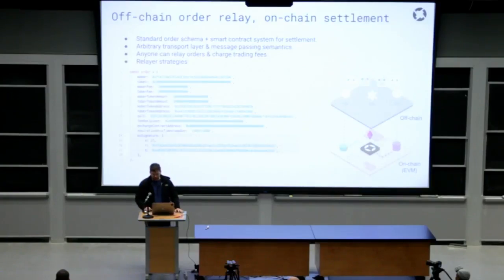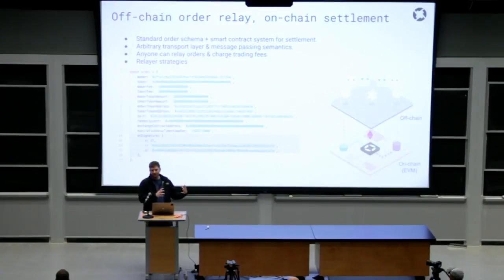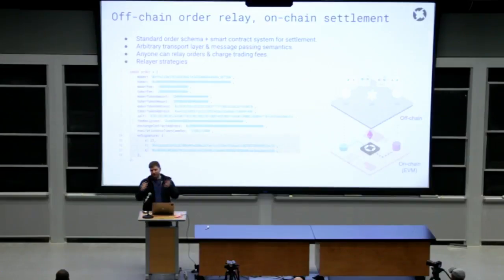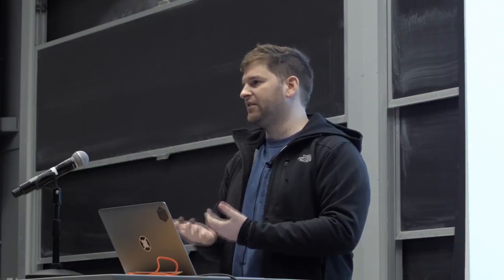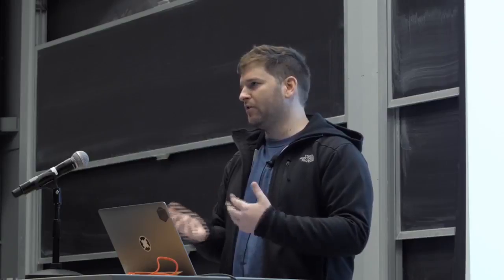These orders exist off of the blockchain — just a chunk of data floating around without touching the blockchain at all. This packet of data is injected into a smart contract on the Ethereum blockchain, and a single transaction occurs only at the time that a trade is actually being settled between two parties. So it's much more efficient.